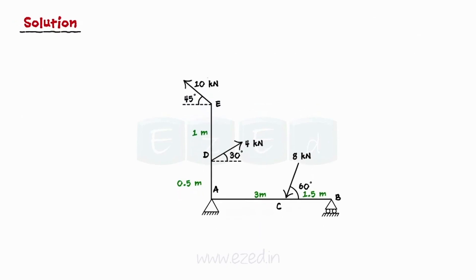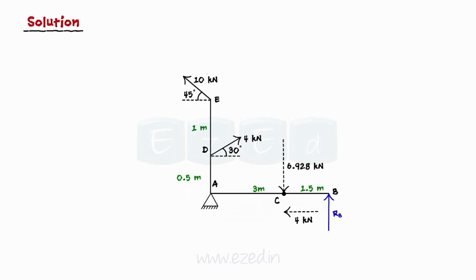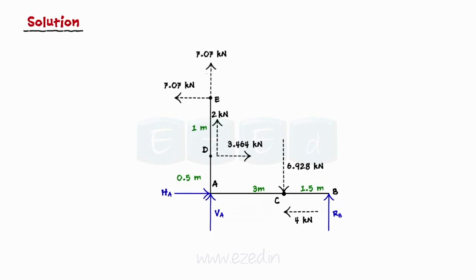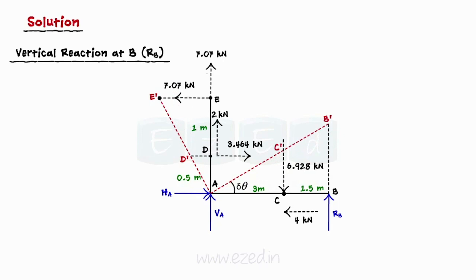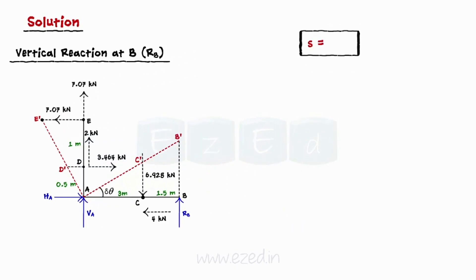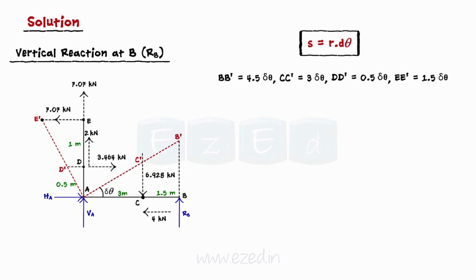We have to find the following three reactions: the vertical reaction at B, and both horizontal and vertical reactions at A. Let us first find the vertical reaction at B. We will first impart a small angular displacement delta theta at A as shown in the figure. Using the distance of each point from point A and the formula S = R·dθ, where R is the distance of each point from point A, we can find the angular displacement at points B, C, D, and E.